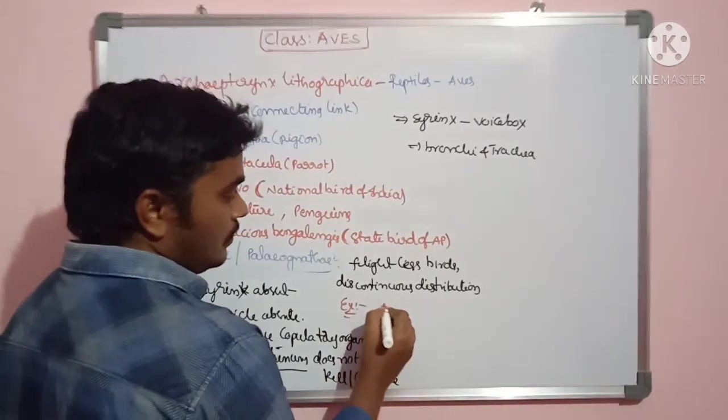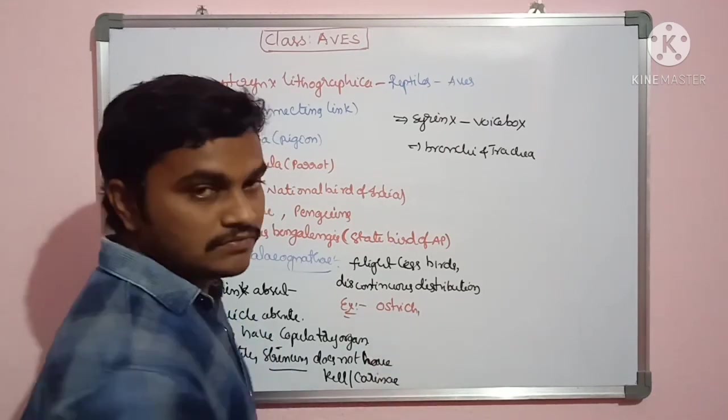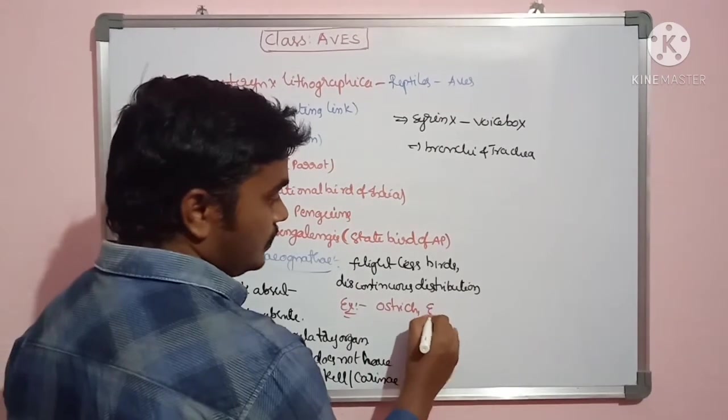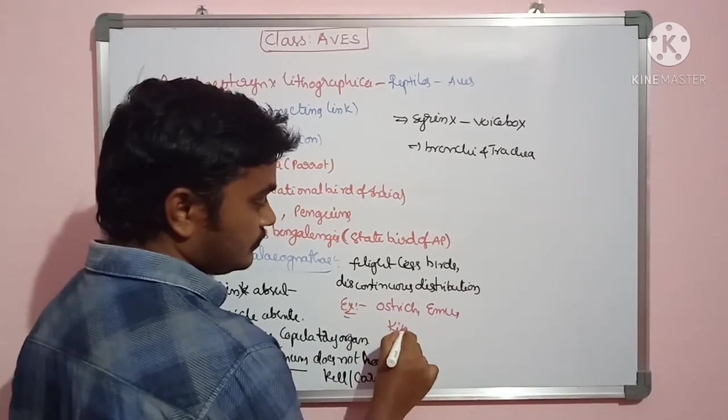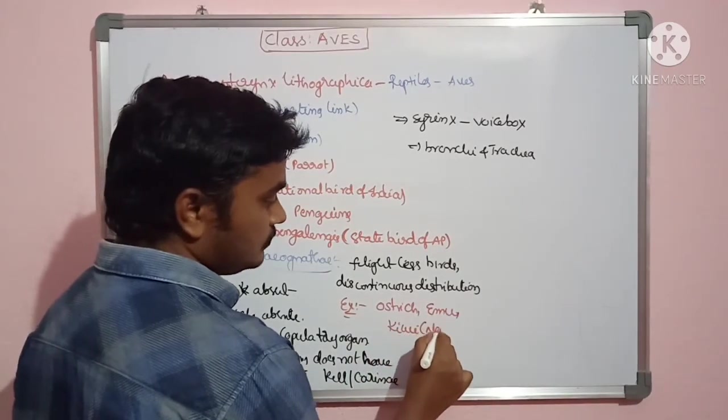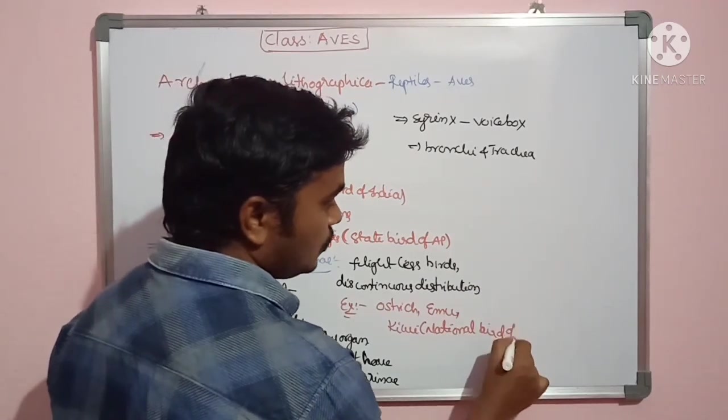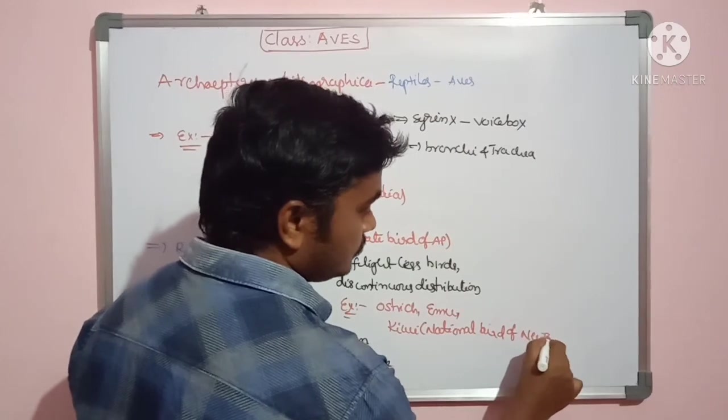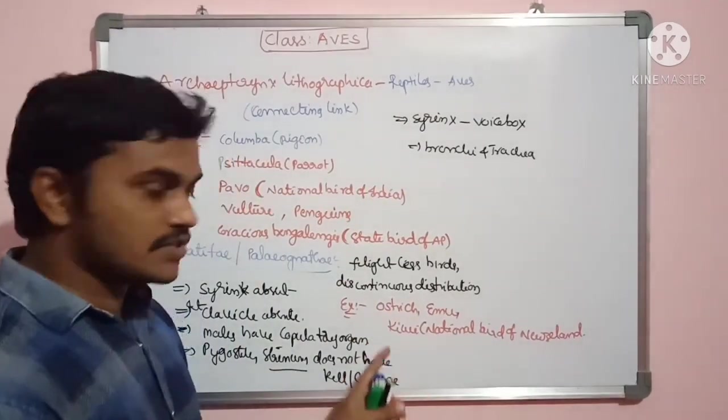One example is ostrich, Struthio camelus. Then emu birds. Then kiwi, national bird of New Zealand. Kiwi birds, ostrich Struthio camelus, Dromaeus, that means emu.